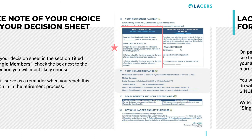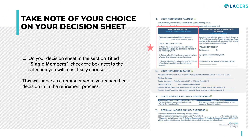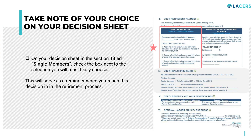On your decision sheet in the your retirement payment section, in the single member column, write the survivor contribution amount in the line provided so that you can have it handy when you're selecting an option.